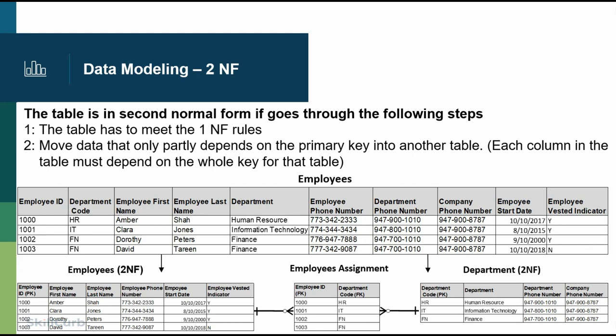We also need to capture the relationship between employees and department data. An employee can work in different departments and a department can have multiple employees. As you recall from the earlier lecture, to resolve a many-to-many relationship we have to create a junction table. In this case it'll be the employee assignment, where we have employee ID and department code as the two columns. The relationship from employees to employee assignment is one-to-many. From department to employee assignment is also one-to-many.